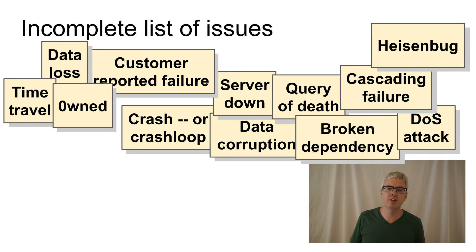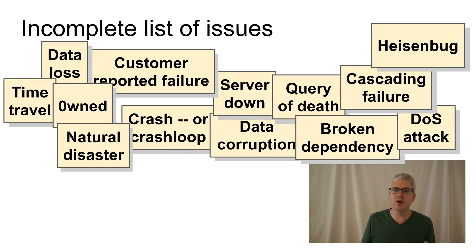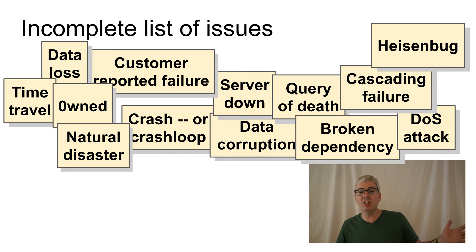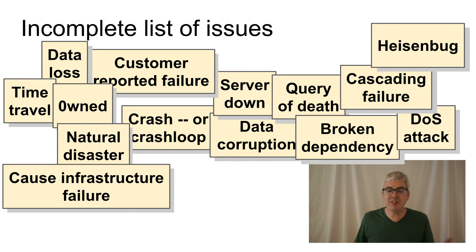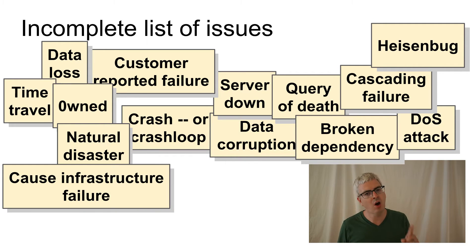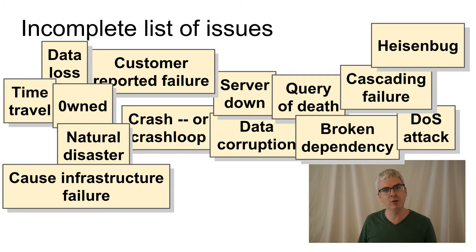You've suffered a security breach — your system, or at least some nodes in your system, appear to be owned. Fire! Flood! Earthquake! Plague! Air conditioning failure! Your system is going down! Even worse, your system has caused a fire, a flood — well, maybe not an earthquake — but it can definitely cause a power outage.